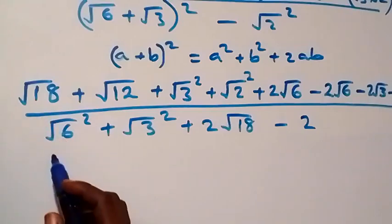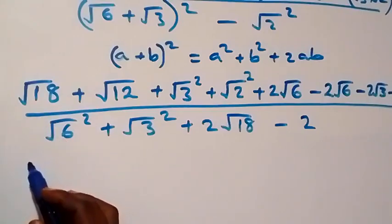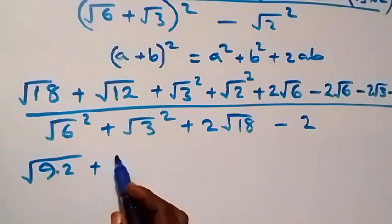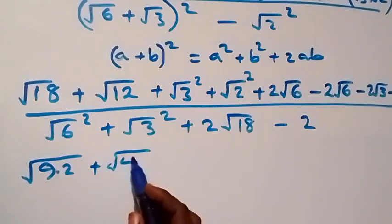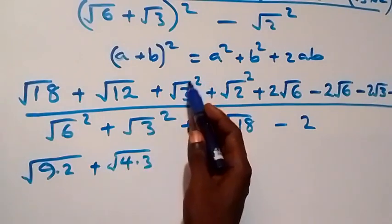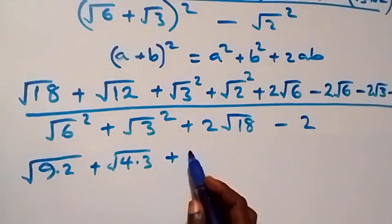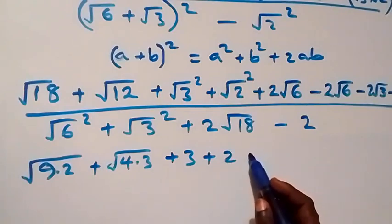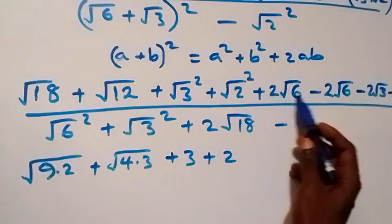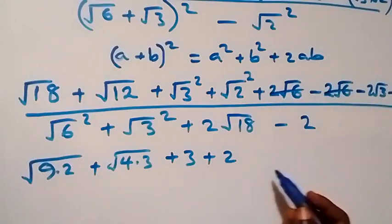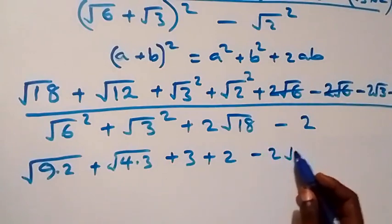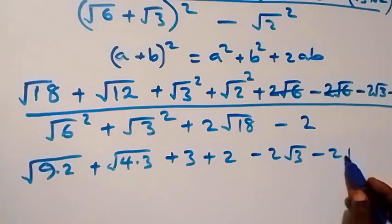Simplifying: √18 = √9×2 = 3√2, and √12 = √4×3 = 2√3. Then √3² = 3, √2² = 2. The +2√6 and -2√6 cancel each other. We also have minus 2√3 and minus 2√2.